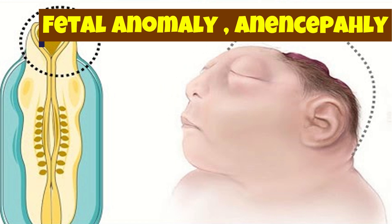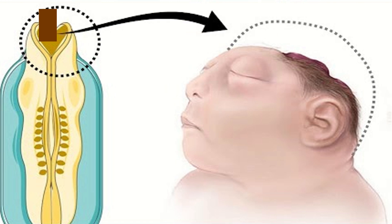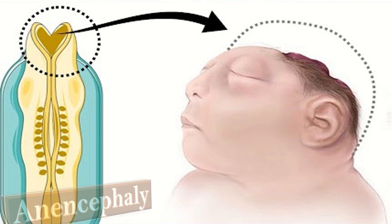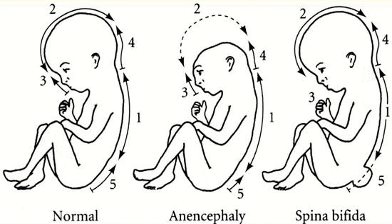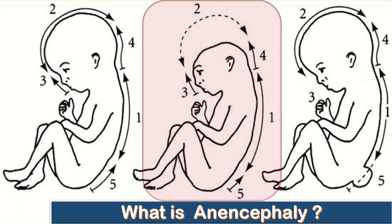Anencephaly is a major abnormality in the head characterized by the absence of most of the baby's head. Essentially, the upper part of the baby's skull and brain doesn't develop in anencephaly — that is, the major part of the brain, skull, and scalp. The baby is therefore born without the front part of the brain, that is the forebrain, and the thinking and coordinating part of the brain, which is the cerebrum.